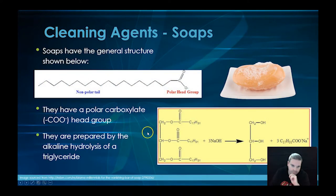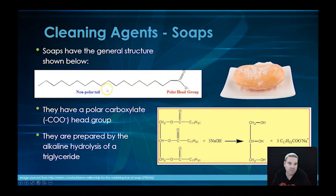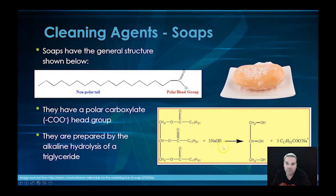Here's an example: we have a long fatty acid, between 12 to 20 carbon atoms, with a carboxylic acid group on the end. How we prepare soap is by taking a triglyceride — which is a fat or an oil — adding sodium hydroxide, to get glycerol or propane-1,2,3-triol and a sodium salt, which is our soap.